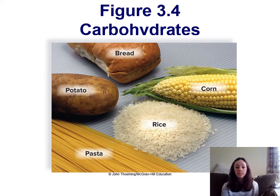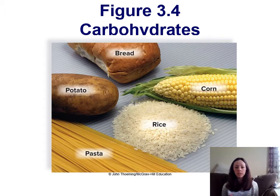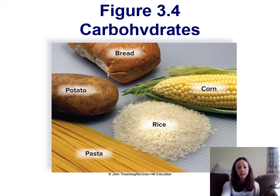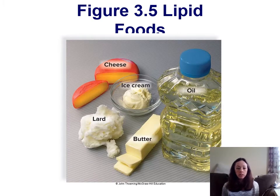You can find all of those biological molecules in the various kinds of foods we eat. We do make a few of them but most of those molecules we get from our diet. You can find carbohydrates in various foods like pasta, rice, corn, bread, and potatoes. You can find fats and oils in vegetable oil, butter, lard, ice cream, cheese, and dairy.